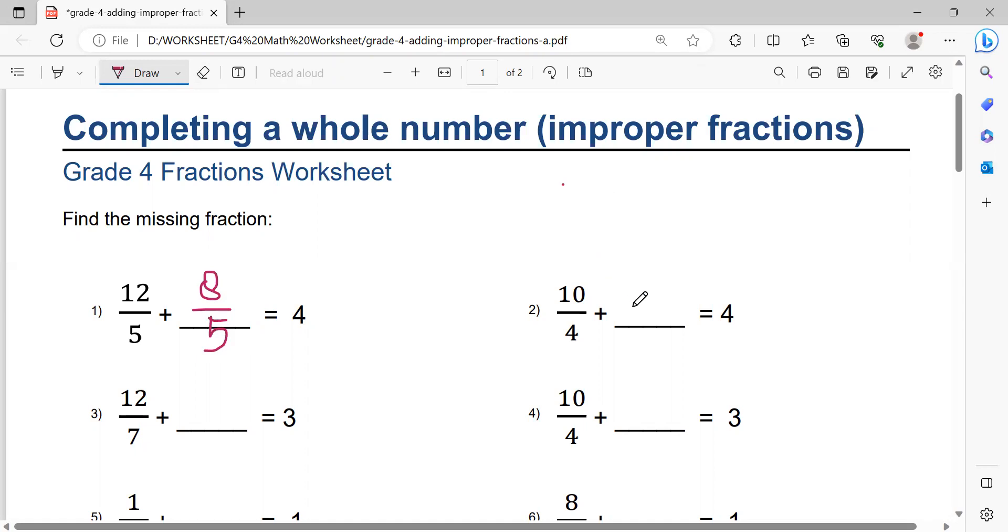Next, this one. 4 times 4 equals 16. 16 minus 10 equals 6. 6 over 4. That's the solution.